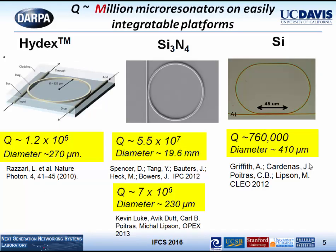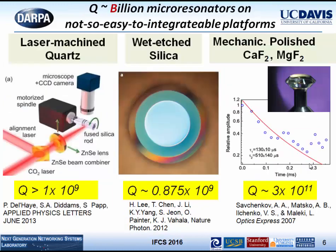As mentioned, a high-Q resonator is an enabler for stable, narrow-linewidth frequency combs. There are basically two approaches. Something easy to integrate on silicon tends to have Q in the millions — some hundreds of millions. Very nice work, but we actually want to go further, to Q of billions. There are micro-machined quartz and silica resonators, and OE Waves has achieved Q of 300 billion — with a B. We can measure this via ring-down. However, it's not easy to integrate this on a chip scale.